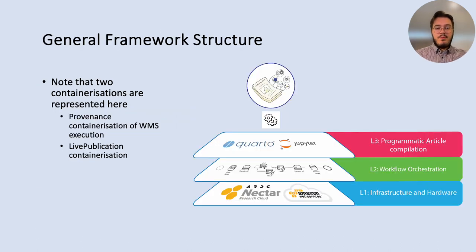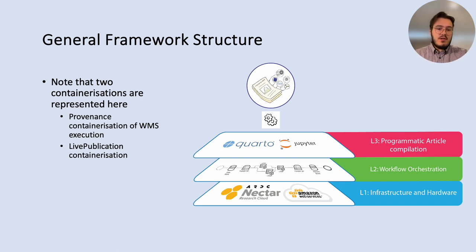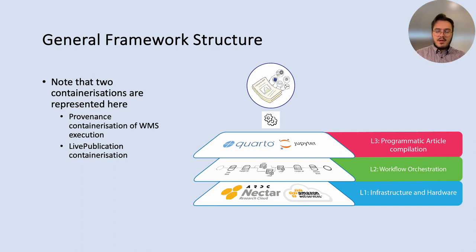Here is a bird's eye view of the framework. It consists of an infrastructure and hardware layer, usually abstracted away by workflow management systems for an end user. The workflow orchestration layer is responsible for generating provenance records for each flow execution. And the programmatic article layer, where programmatic articles are effectively templates applied to our data model, resulting in a versioned paper. There are two containerizations: the provenance containerization within our data model, and the data model itself, which is the live publication containerization.